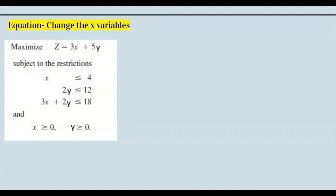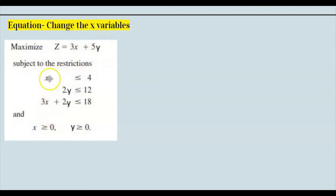Now I'll change x₁ and x₂ to the x and y notation we know for graphing. The first variable, previously x₁, becomes 3x, and the second variable becomes 5y instead of x₂. In the first column are all the x's, and in the second column are the y's. The restrictions have also been converted to x and y.